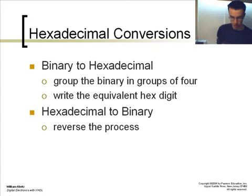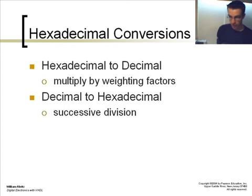There are two forms of hexadecimal conversions that are presented in this chapter: a binary to hexadecimal conversion, which is grouping the binary numbers in 4 to write the equivalent hex digit, and a hexadecimal to binary, which is just the reverse process. For converting hexadecimal to decimal, we multiply by the weighting factors and decimal to hexadecimal, which uses successive division.